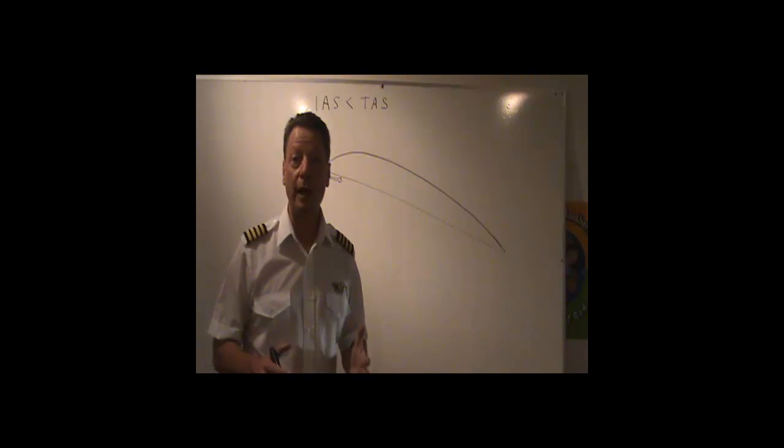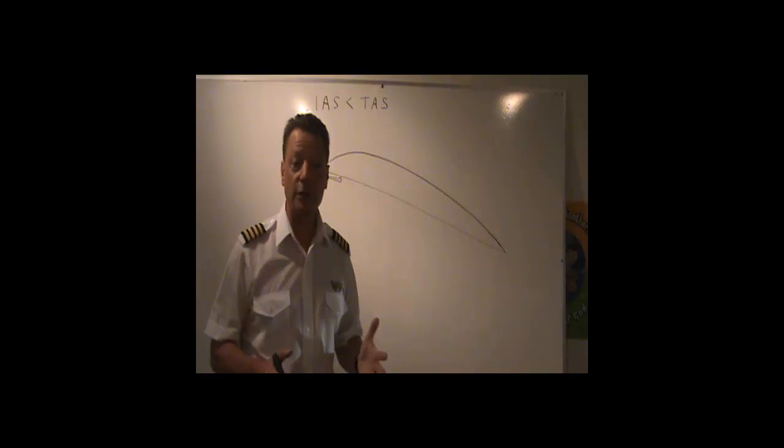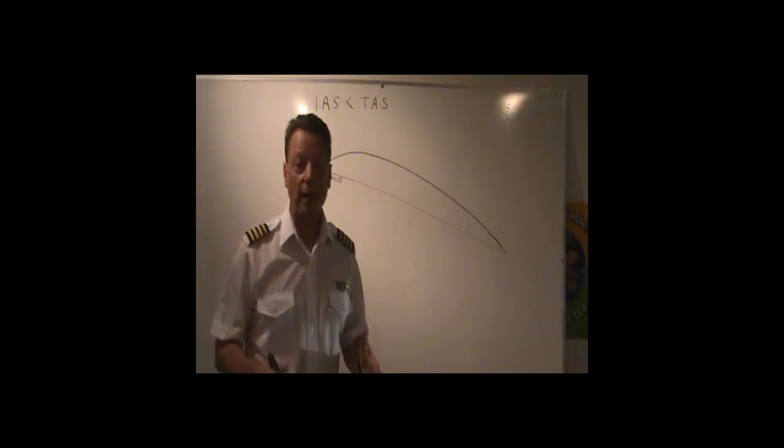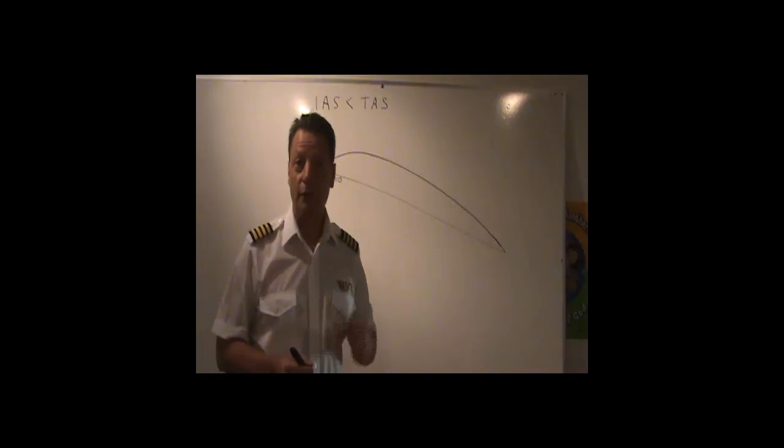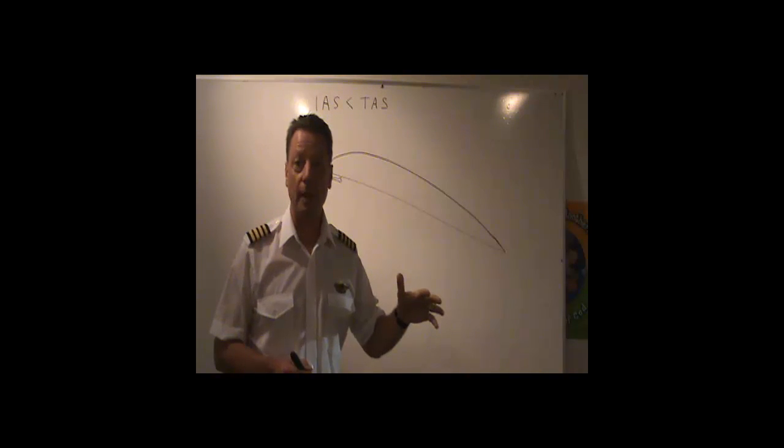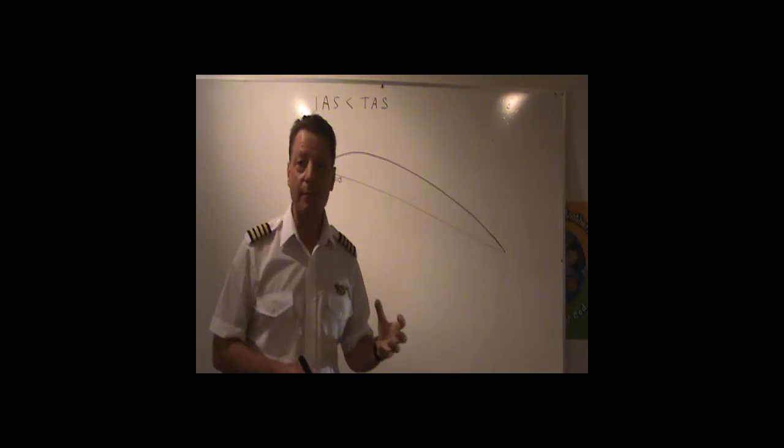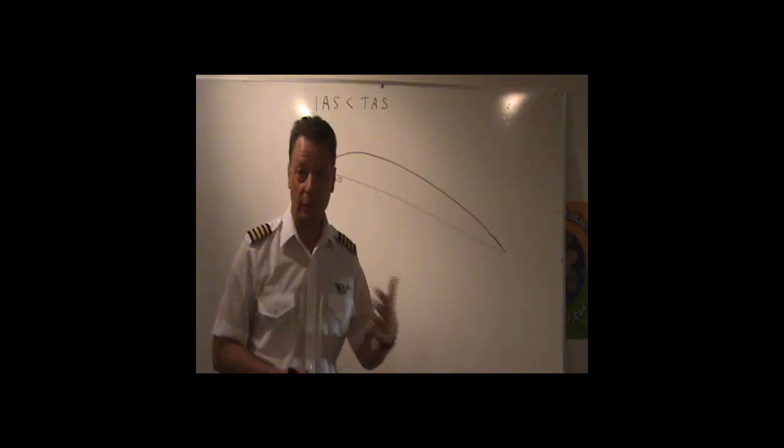So here's the point that I want you to get today. An aircraft in any given configuration will always stall at the same indicated airspeed regardless of altitude because the airspeed indicator is directly related to air density. So even though the airplane will stall at a higher true airspeed, it will always stall at the same indicated airspeed that you see on the instrument assuming that it's in the same configuration.